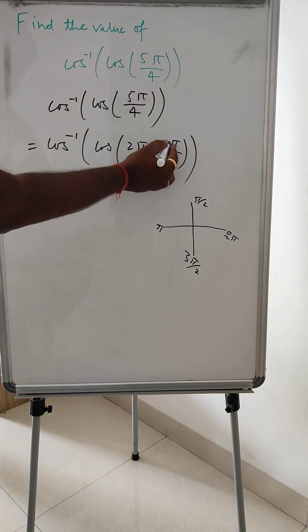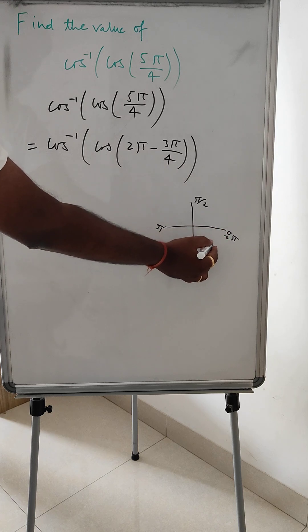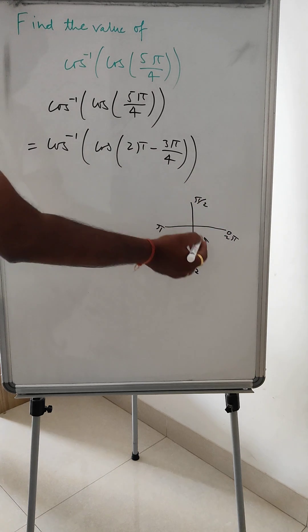So now 2π minus 3π/4 means into this quadrant, right? And here the cos is positive.